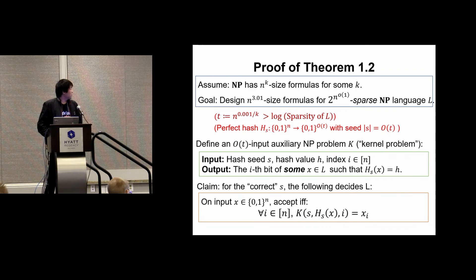Now we'll use this auxiliary problem to build an algorithm for L. Basically what we do is compare the input string X with the unique yes instance that shares the same hash value with X. To do the comparison, we'll use the K oracle n times, and each time we'll compare one bit. Finally we'll return yes if and only if all the bits match. So this is our algorithm for deciding L. Now we'll implement this by a small size formula.